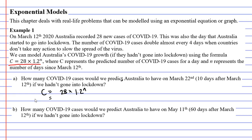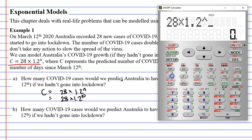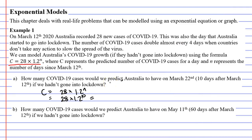10 days later means that N is going to be 10. Bringing up our calculator: 28 times 1.2 to the power of 10 comes out to about 173. So we would have had 173 cases on March 22nd had we not gone into lockdown.